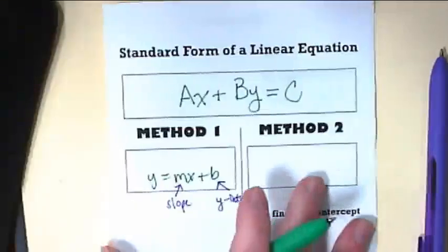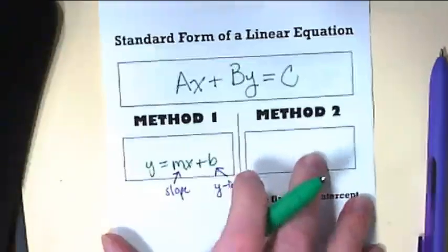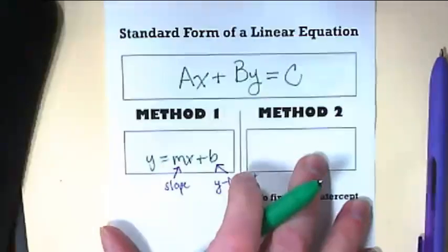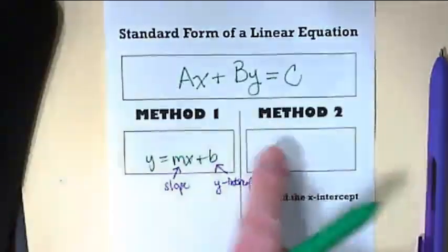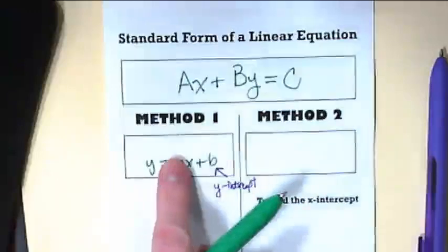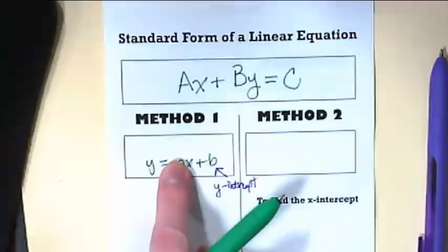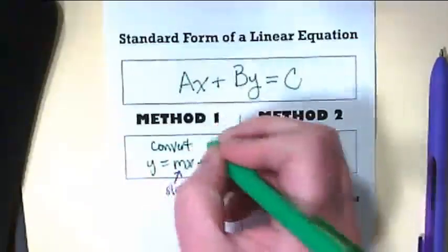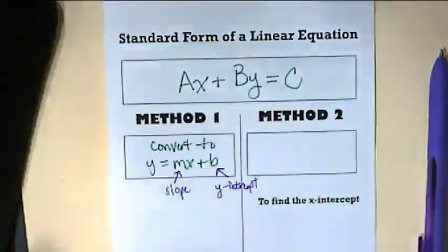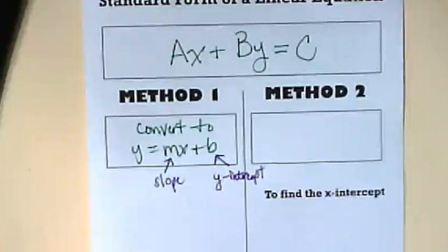When we're talking about solving with standard form of a linear equation, what we're trying to get is a line on a graph. Quite often the solution for this is the graph itself. There's two methods to get there, and we're going to work with the first method today, which is to convert to slope-intercept form, or y equals mx plus b.